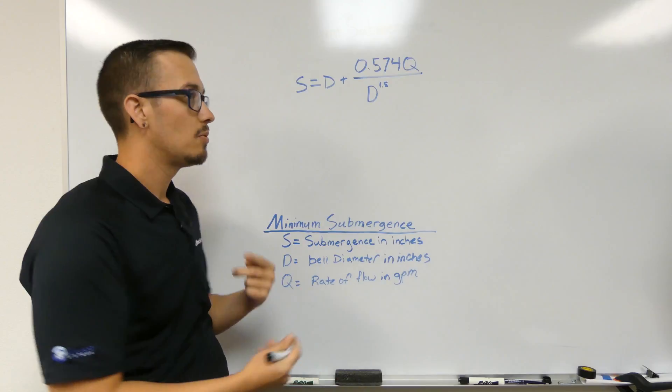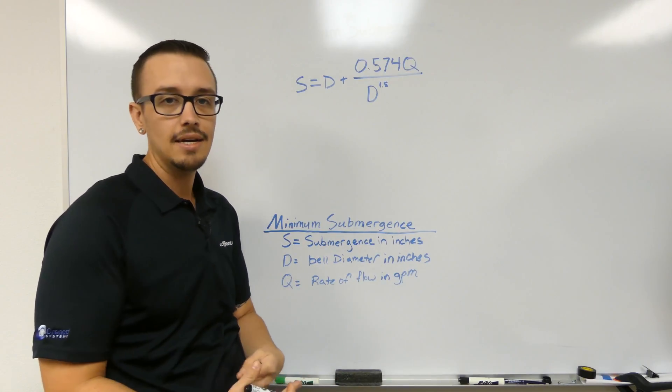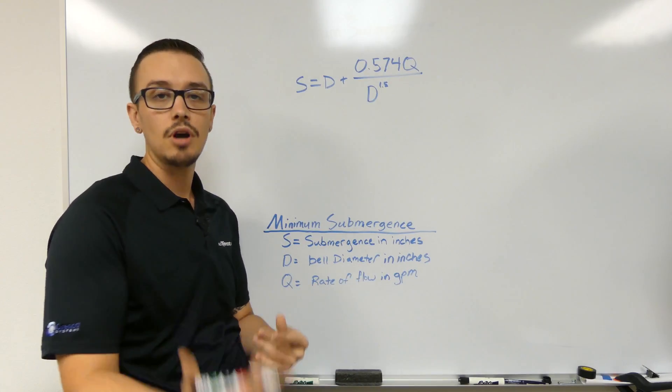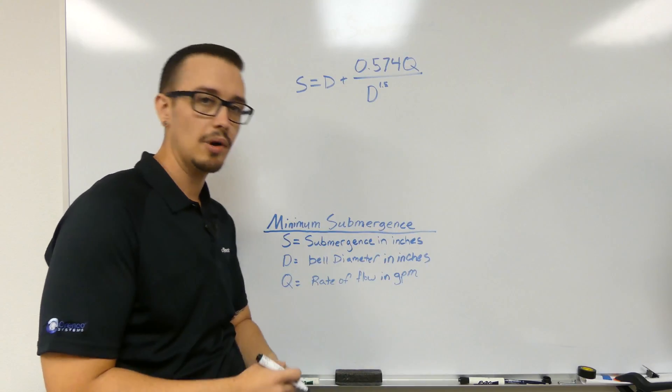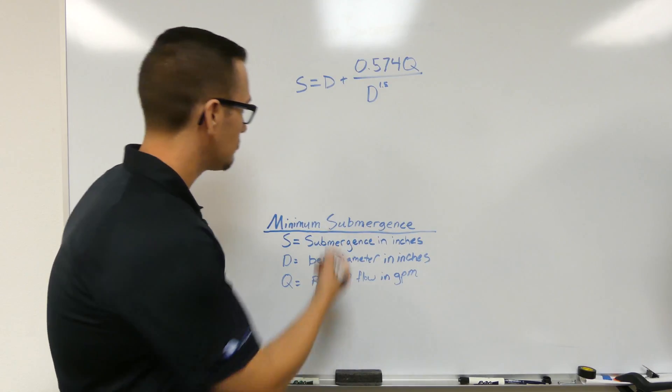So let's just mock one up. We'll use a common flow rate, whether it's a submersible pump or a jet pump. We'll use 15 gallons a minute.